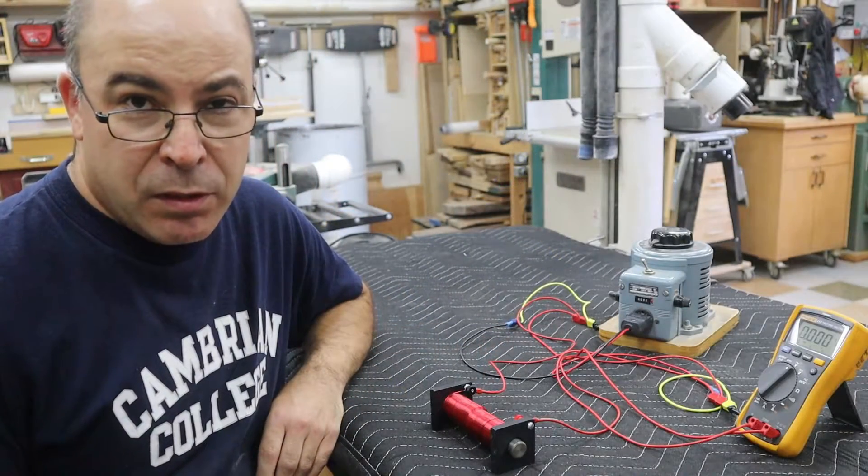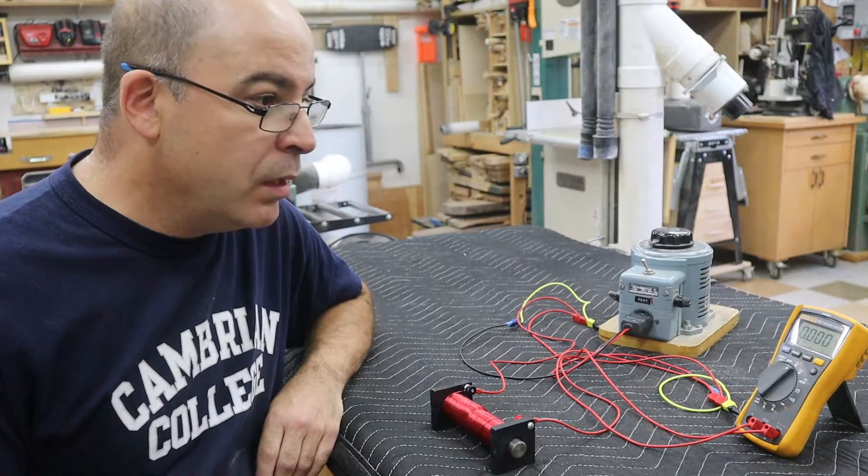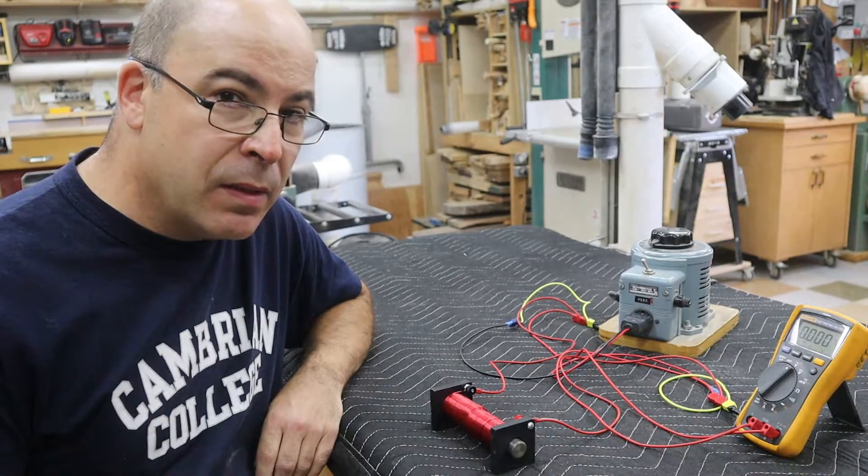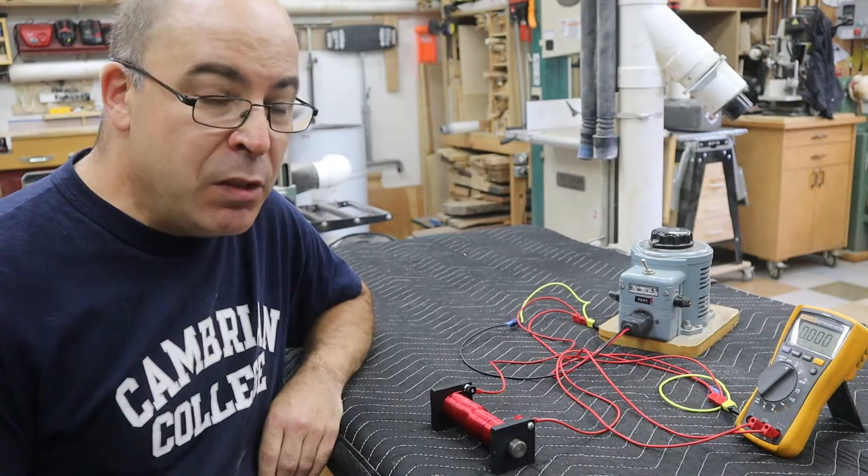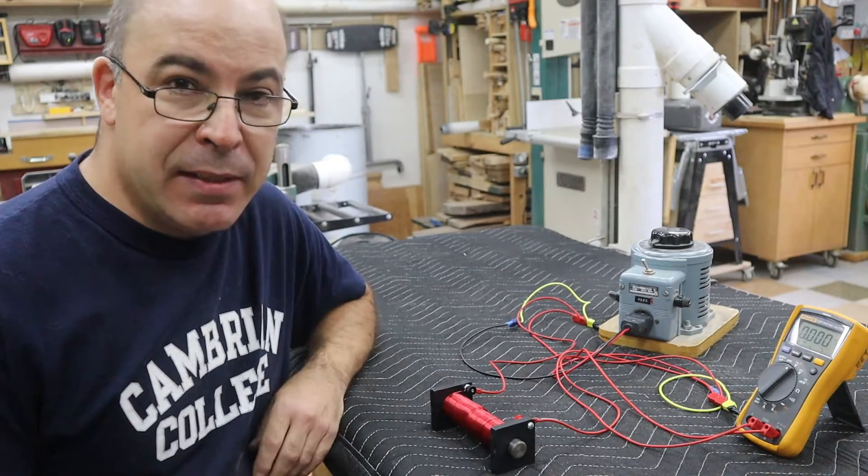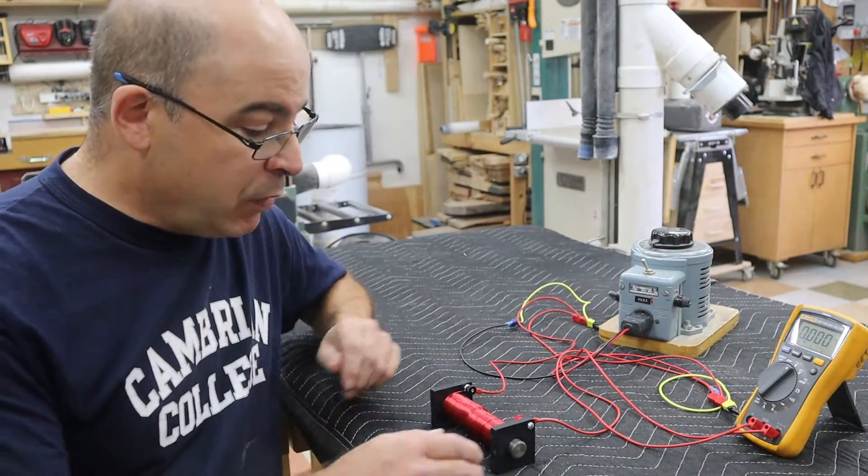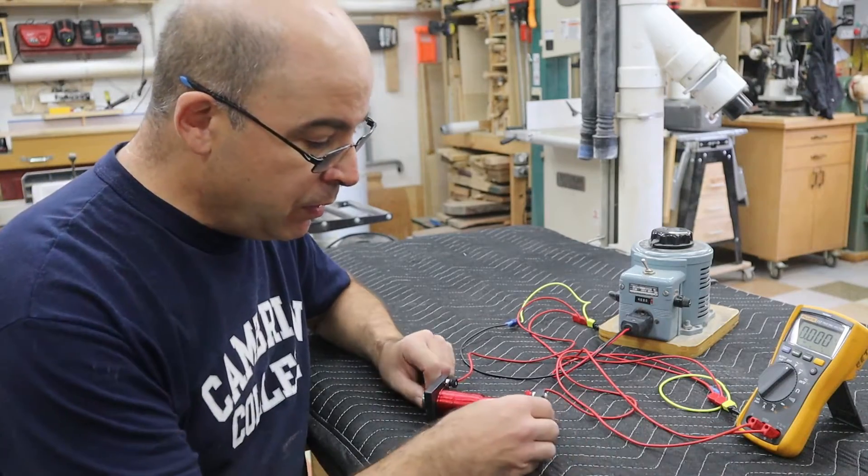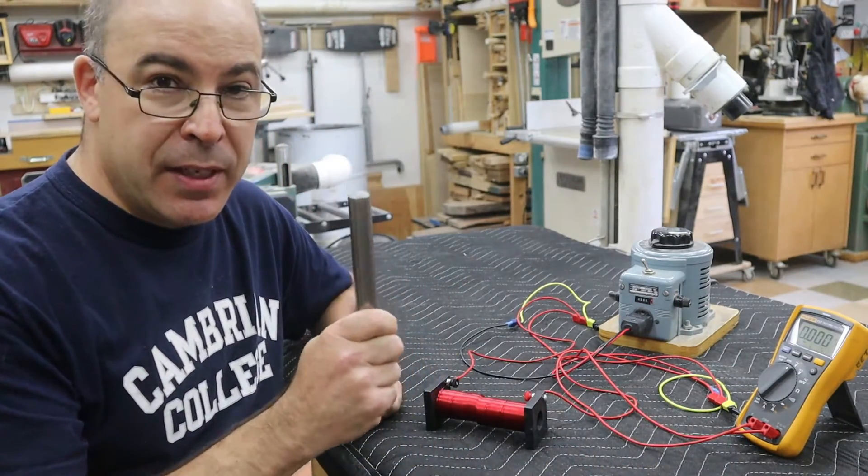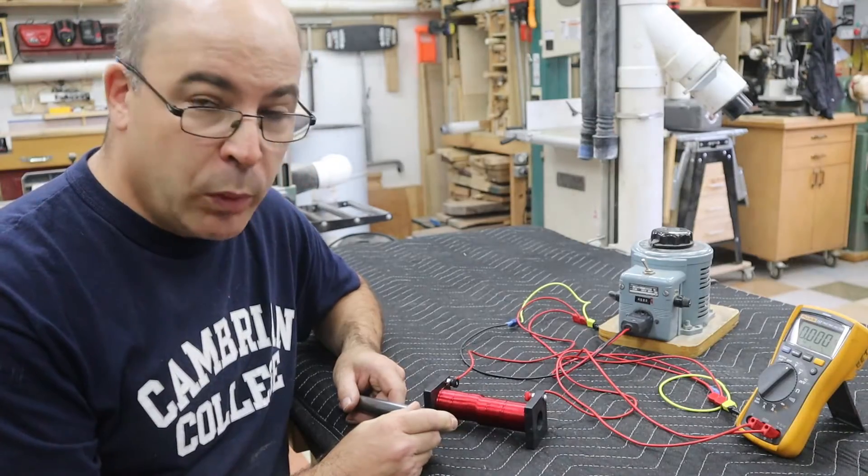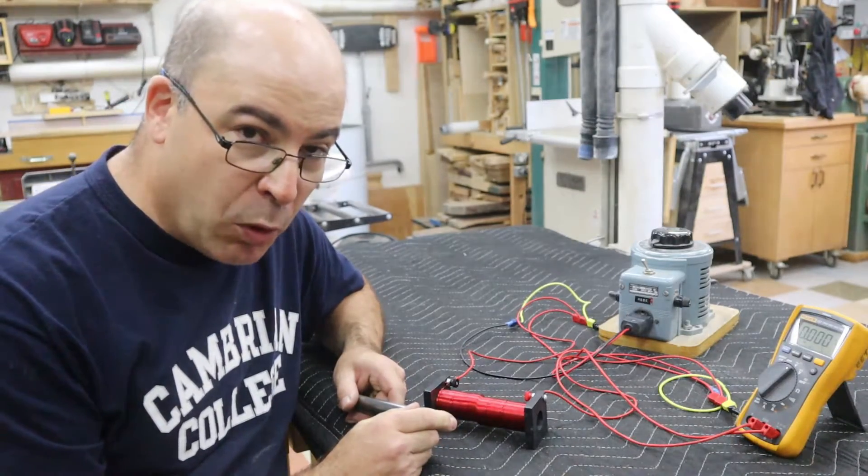This segment is going to feature a demonstration on the effects of eddy currents on devices that do not feature laminated steel cores. I've got a coil with a solid steel bar that will sit inside of it, replicating a relay or even a contactor coil.